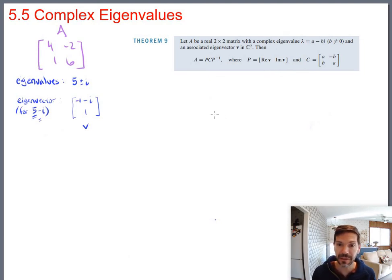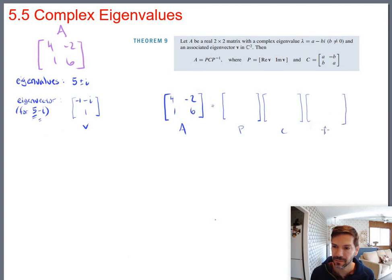So let's take a look and see if we can break that down for our particular A matrix. So we have 4, negative 2, 1, 6. That's our A matrix. And we should be able to break that down into a P, which we'll get to in a minute, P times a C times a P inverse.